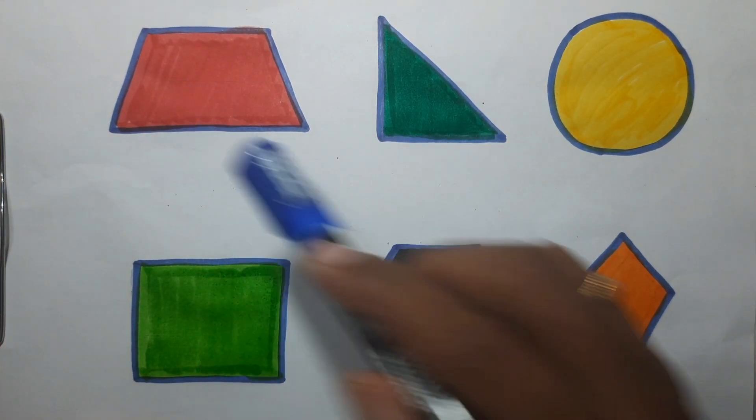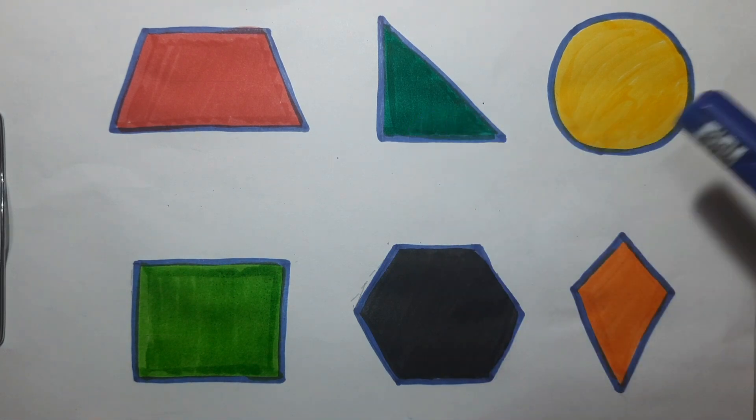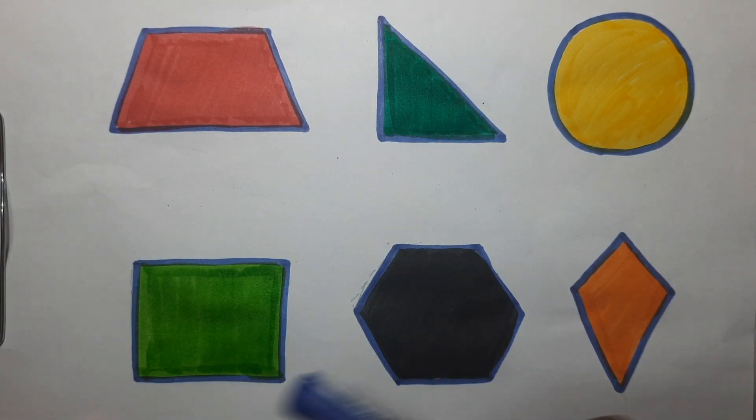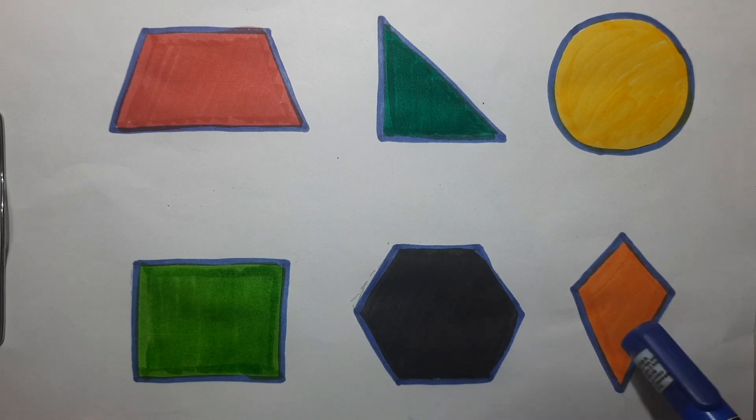Trapezoid, right angle triangle, circle, square, hexagon, rhombus.